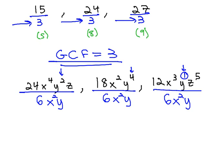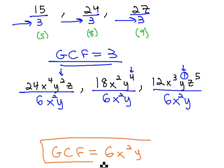We now have our greatest common factor. The greatest common factor of each of these three terms is 6x squared y. We found that 6x squared y by first taking the greatest common factor of each number, and then also listing all the common variable factors with lowest exponent.